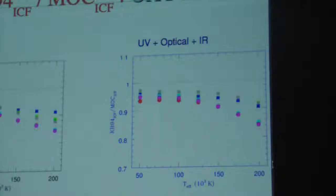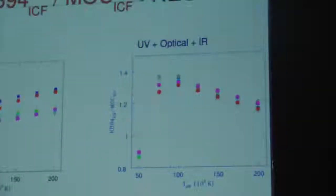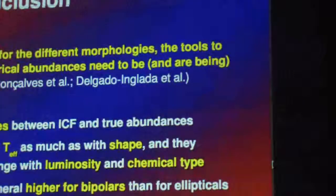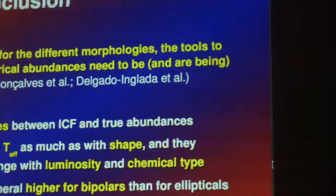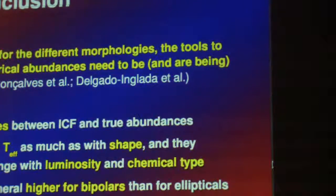And this is the same trend for oxygen, neon, and argon. The conclusion is: to account for the different morphologies, the tools to derive empirical abundances need to be — and are being — improved. The key lesson to keep in mind is that the discrepancies between the two abundances depend on central star temperature, shape, luminosity, and chemical type, and are worst for the bipolar case compared to the others. Thank you for your attention.